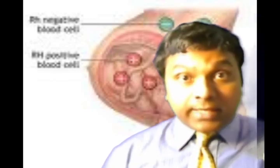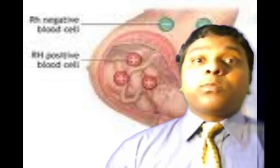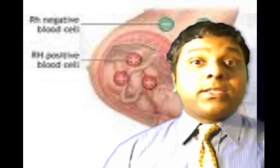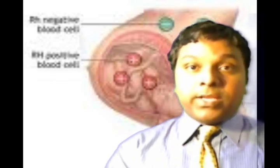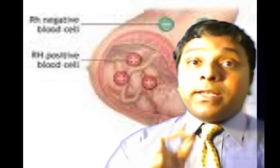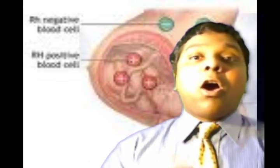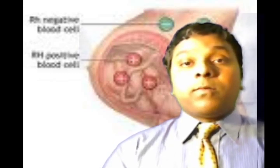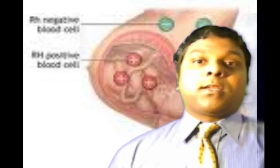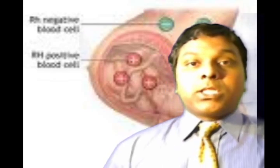The RH blood group is a very complex human blood group. The RH antigens are grouped in three pairs: CC, DD, and EE. D is the particular concern. A woman who is lacking the RH factor is called RH negative, and if the fetus is RH positive — meaning the fetus carries the D antigen — when those fetal cells enter the mother, the mom starts to produce antibodies.